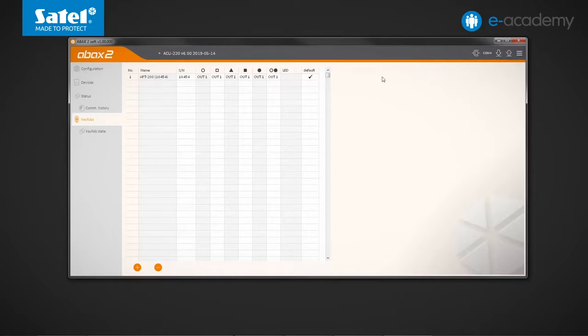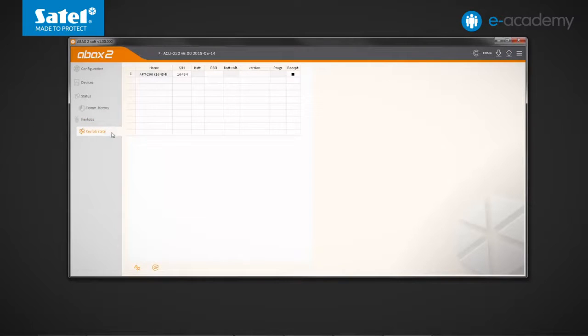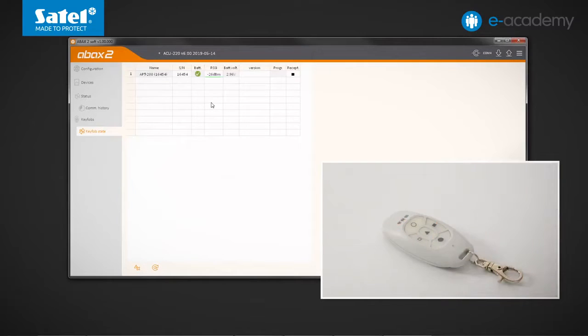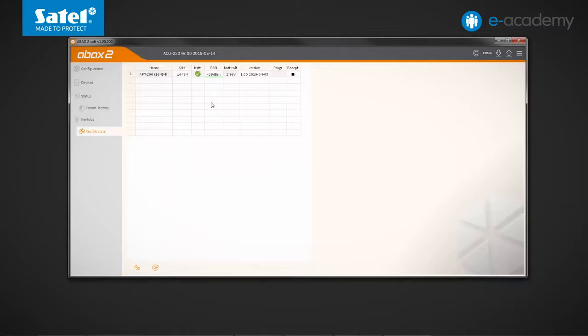Finally, let's open the key fob state tab. Although you can see the device on the list, the information about battery voltage, firmware version, etc. is still missing there. All you have to do is press any button on the key fob for the respective cells of the table to be populated with the key fob data. OK, the information that interests us is now there.